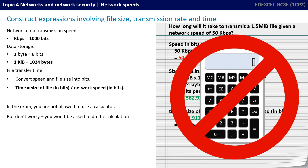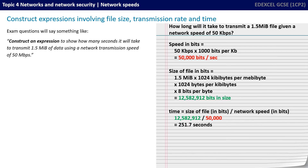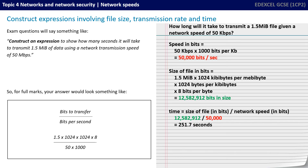In the exam you are not allowed to use a calculator, but you won't be asked to do the full calculation. Exam questions will say: construct an expression to show how many seconds it will take to transmit 1.5 megabits of data using a network transmission speed of 50 megabits per second. Your answer could look like: 1.5 × 1,024 × 1,024 × 8 divided by 50 × 1,000.